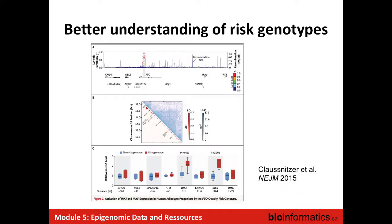This is a very nice example of how you can use epigenomics to better understand why a particular variant might be associated with disease. GWAS tells you there's a variant in that region associated with disease, but you have nothing in between — you don't know mechanistically why. FTO is a gene where a number of GWAS on weight and obesity identified a haplotype strongly associated with the trait. If you're a heterozygote, you tend to be roughly one kilogram heavier.